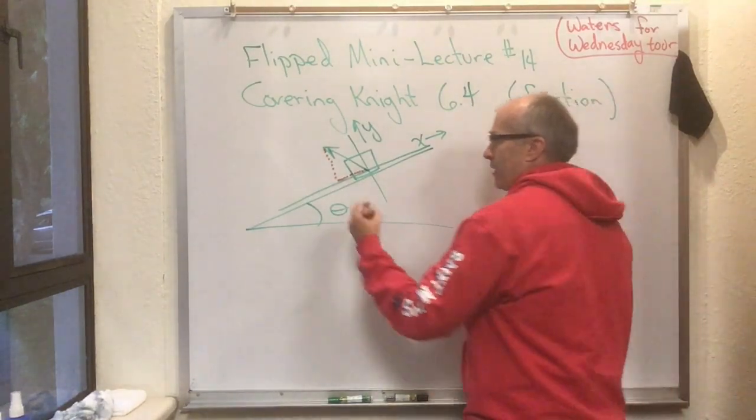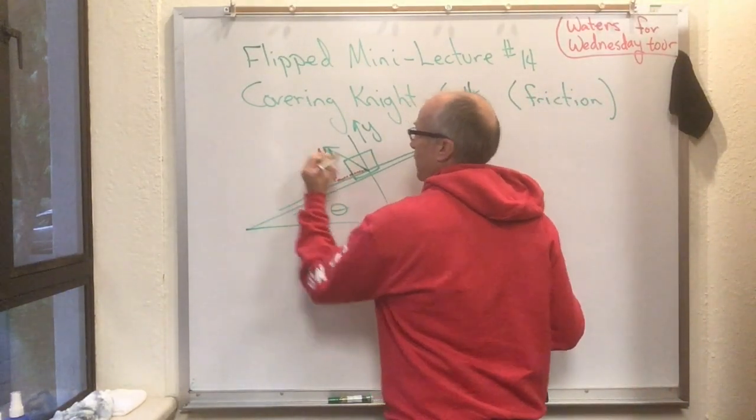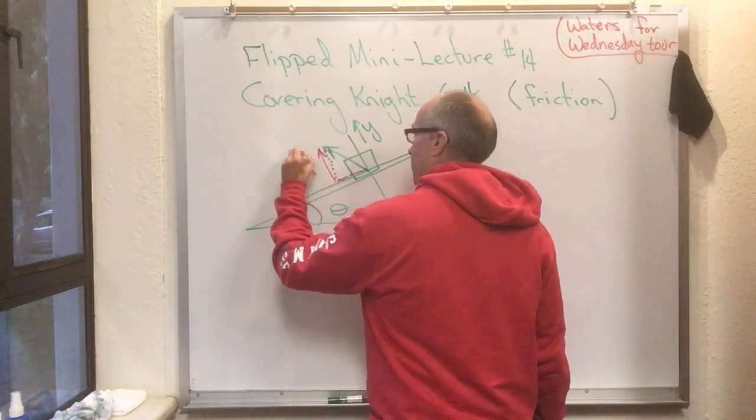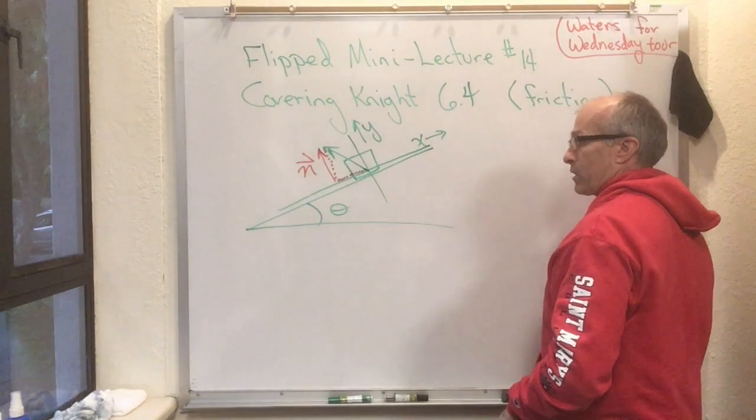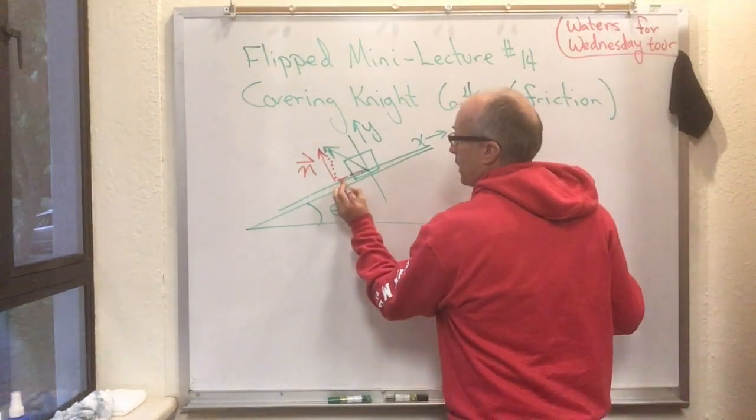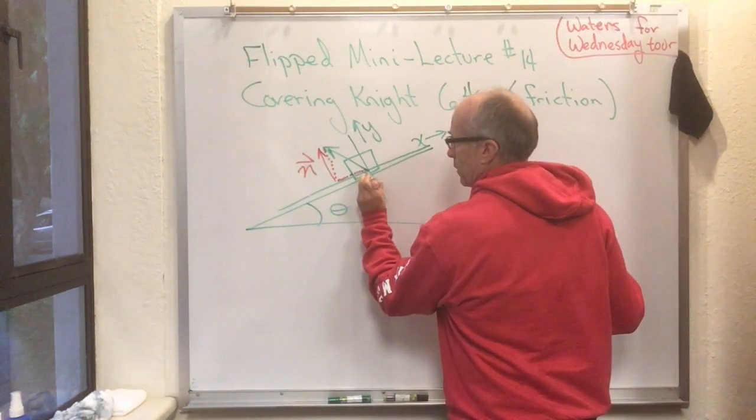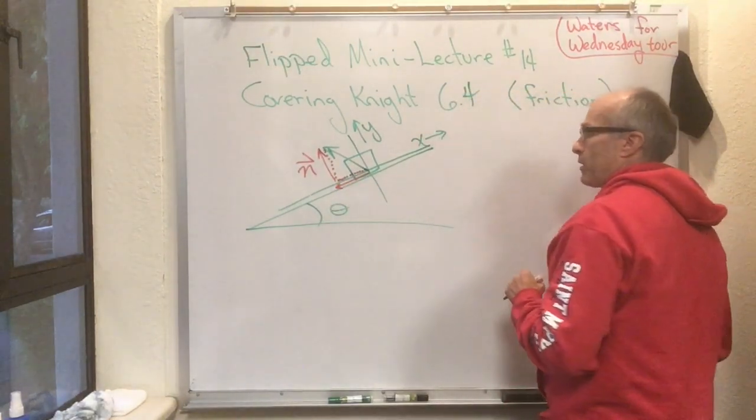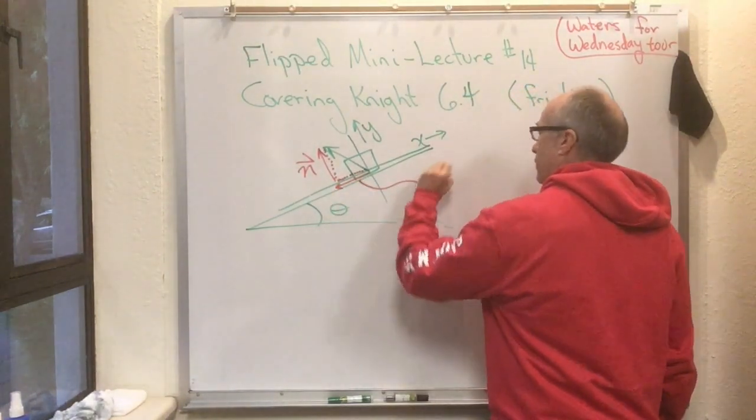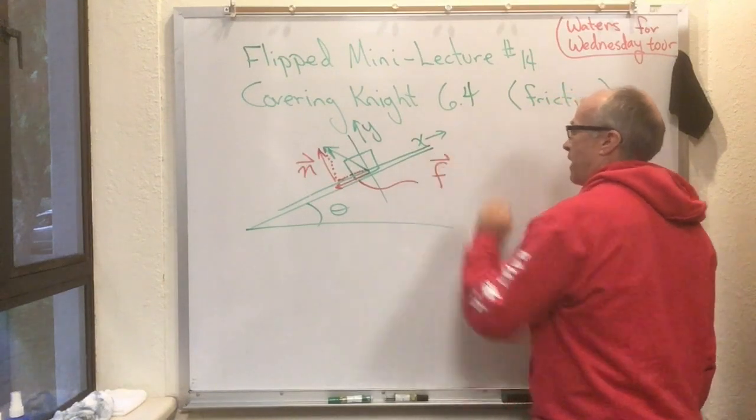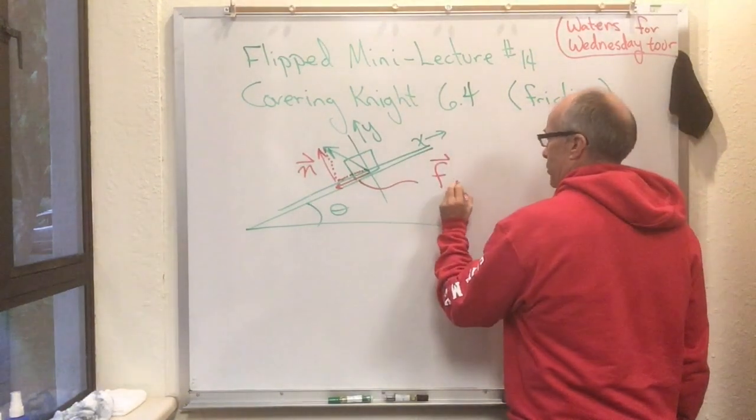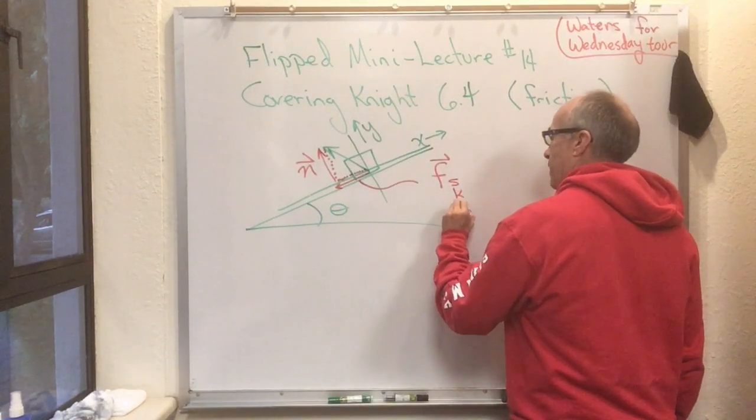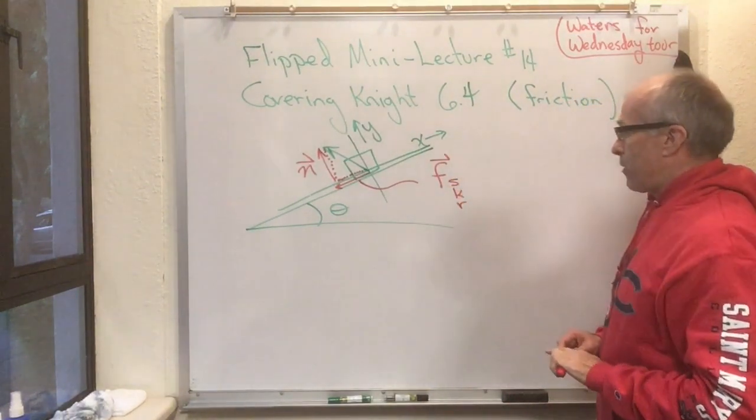Whatever this component of this vector is that's perpendicular to the plane, we call that n, the normal force. And whatever this is here, the component that's parallel to the plane, Knight calls that lowercase f. And then he's got three different versions: s, k, and r. And we want to talk about all three.